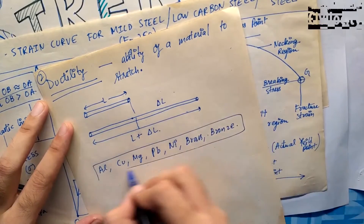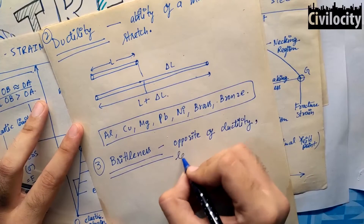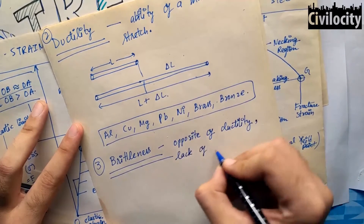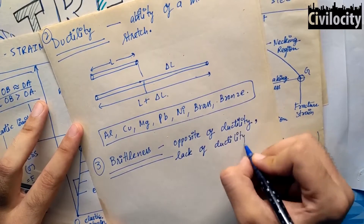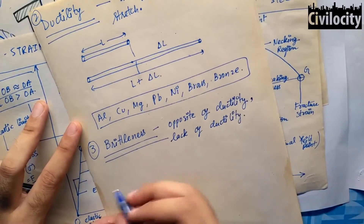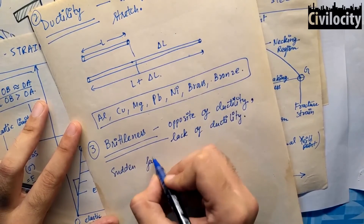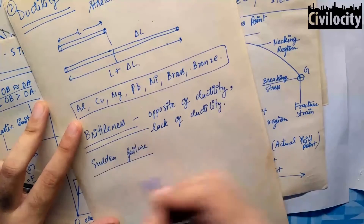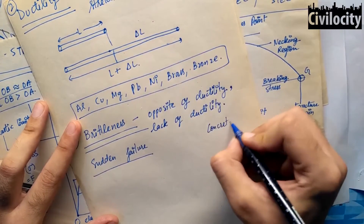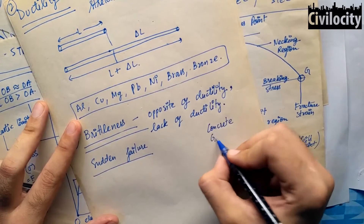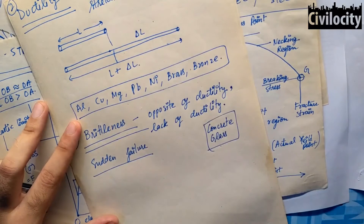Similarly, there is brittleness. Brittleness is the lack of ductility — meaning zero tolerance for stretching. The best examples are concrete or glass. If you stretch concrete, it will break. If you see glass at room temperature, it will break — it will never stretch. Brittleness means without any warning, the material will fracture. Materials that break without giving any warning when stress is applied are called brittle materials.